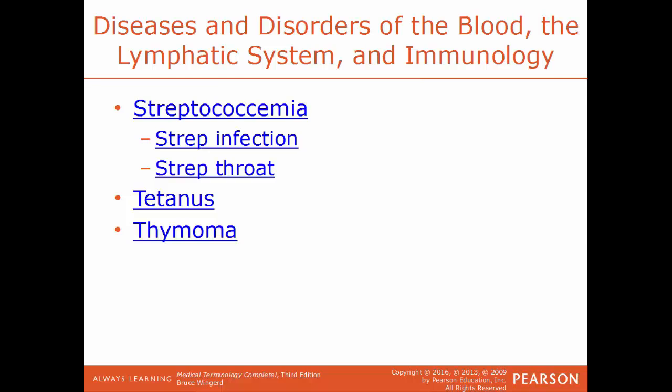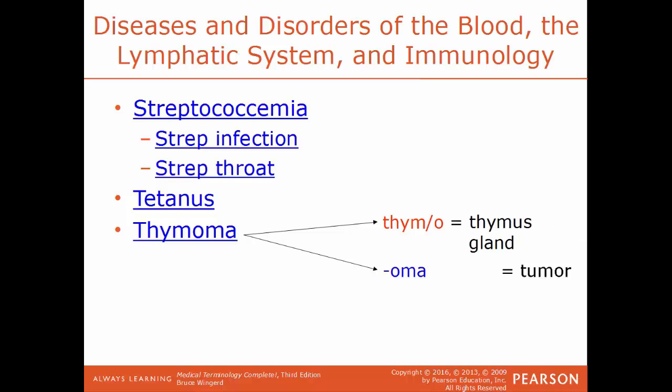Tetanus is a bacterial disease that, if untreated, leads to spasms of voluntary muscles. Spasms become so rapid they cause rigidity — known as lockjaw — because the muscles of the neck and jaw contract so tightly the jaw can't be moved. The spasms become persistent and painful. Thymoma is a tumor on the thymus gland, usually benign and not common, and typically associated with the disease myasthenia gravis. Breaking it down: thymo refers to the thymus, and -oma refers to a tumor.